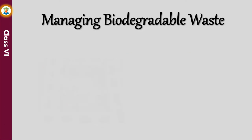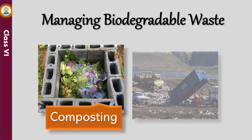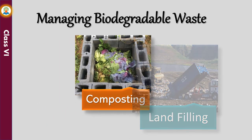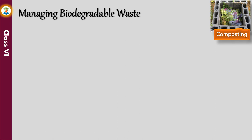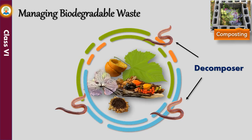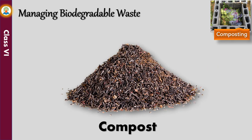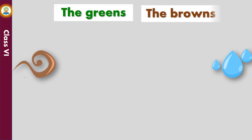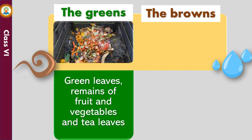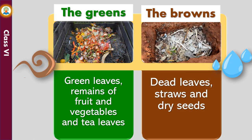Two important methods used in biodegradable waste management are composting and landfilling. In composting, decomposers work on plant remains and other organic materials, converting them into an earthy, dark, crumbly substance called compost, used as organic manure to enrich soil. Decomposers require air, water, and plant products — the greens and the browns. The greens consist of fresh plant materials such as green leaves, fruit and vegetable remains. The browns consist of dead plant remains such as dead leaves, straws, and dry seeds.